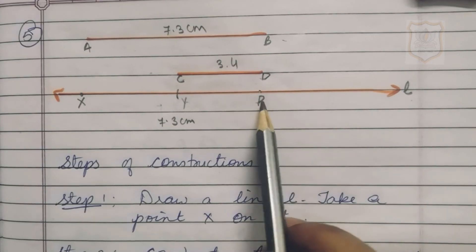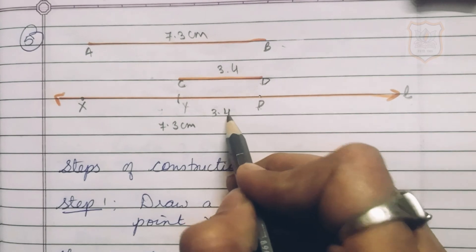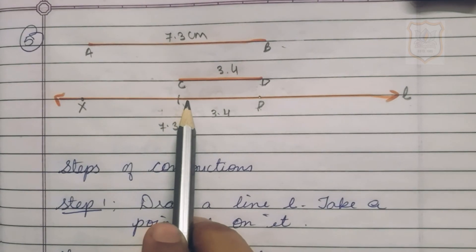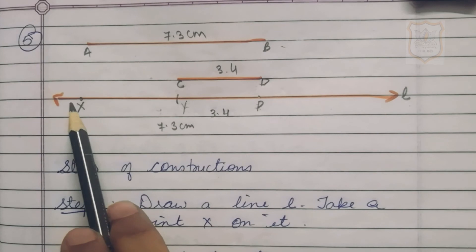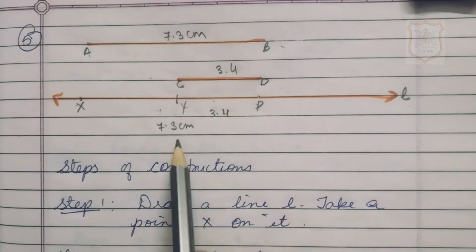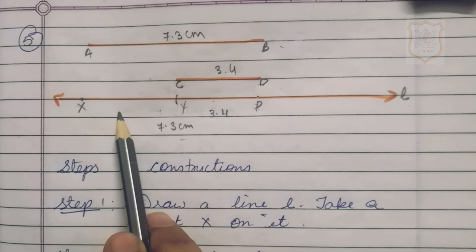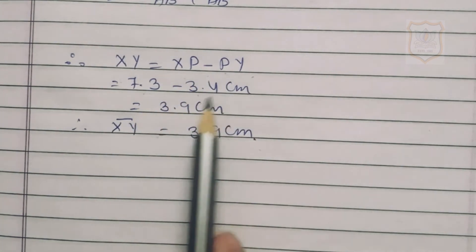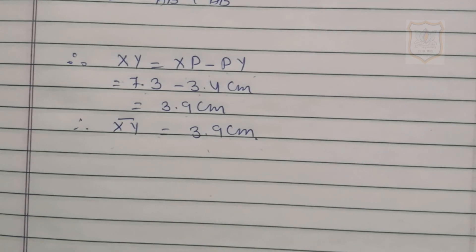The measurement of PY equals CD = 3.4 centimeter. To find XY, we subtract PY from XP: XY = XP − PY = 7.3 − 3.4 = 3.9 centimeter. Therefore, line segment XY equals 3.9 centimeter. With this, we end today's video and will continue the chapter in the next video. Thank you.